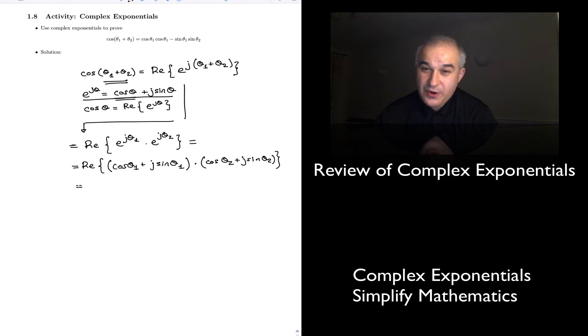And we have the real operator because the cosine is the real part of e to the j theta. And so all you have to do is multiply these two. So cosine of theta 1 times cosine of theta 2. Is that real? Yes. The real operator, therefore, allows us to keep it. Cosine of theta 1 times cosine of theta 2.